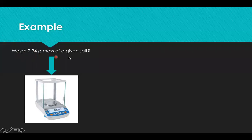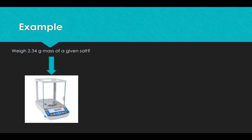For example, suppose you are asked to weigh 2.34 grams of a given salt in an analytical balance. This is the analytical balance — you are given this and asked to weigh 2.3 grams of a given salt. If you look at this particular instrument, you will find it has four decimal places. So the precision — this whole value — would be the significant figure given by this particular instrument.